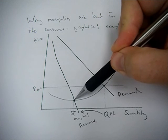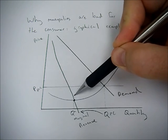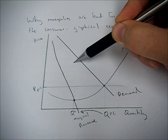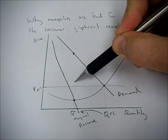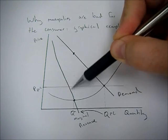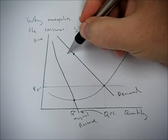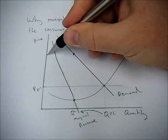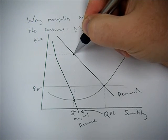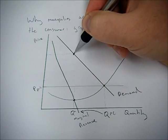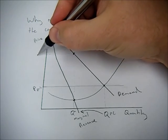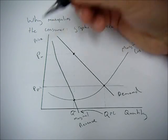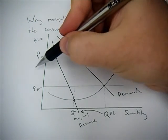Likewise, this is their cost, but what they can charge consumers ties with the demand curve. So we draw the line straight up from this intersection to the demand curve, and then where that quantity hits the demand curve—which is where we figure out how much consumers will buy at a given price—we figure out the price a monopoly can charge to consumers.